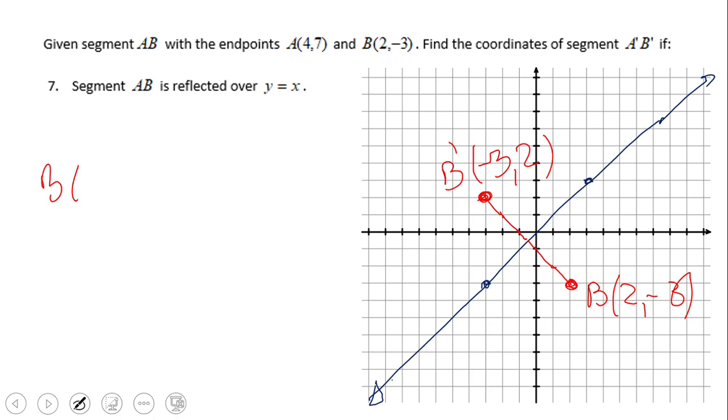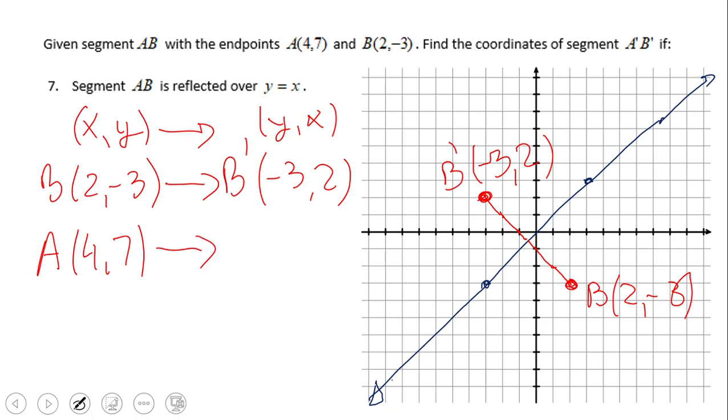So B at (2, -3) under reflection over y equals x becomes B prime at (-3, 2). Now let's try to get the rule: (x, y) becomes, under reflection over y equals x, (y, x). X and y switch; interchange is another word that you can hear for a reflection over y equals x. So the point A at (4, 7) will become A prime at (7, 4).